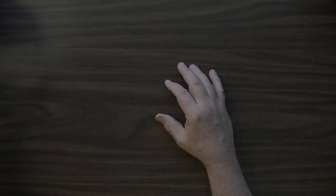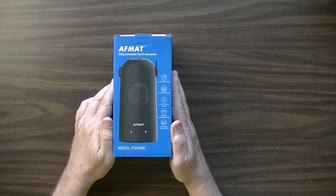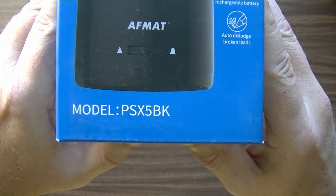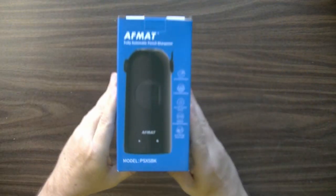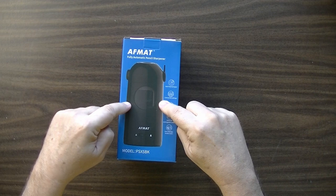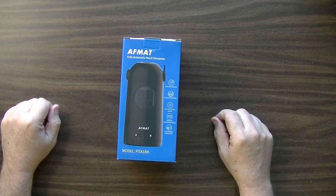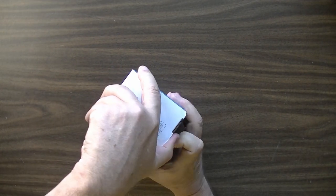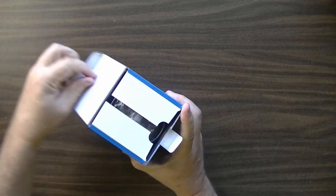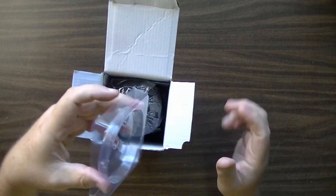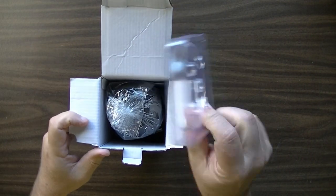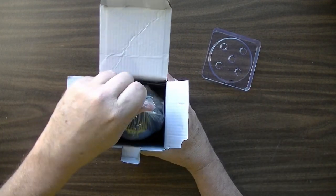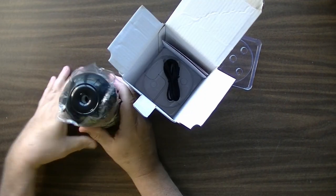All right. So here it is. It's the AFMAT model PSX 5BK. Let me just stick it right up there so you can see it. Okay, so we're going to unbox the black one here and see what comes in the box. Comes with free plastic top. No extra charge. How awesome is that? And the sharpener, of course.